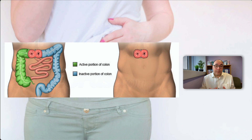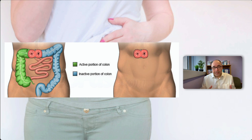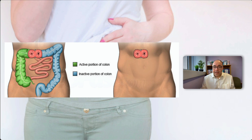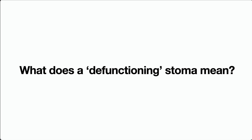The other important differentiator is the difference between a permanent and a temporary stoma. A temporary stoma is usually reversed when the dust settles, whereas with a permanent stoma everything else beyond that stoma is completely taken out of action — for example, in major cancer surgery.